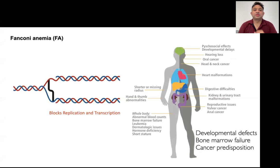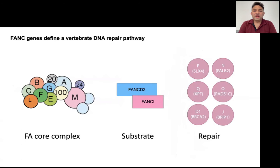These crosslinks block DNA from being replicated and block transcription as well, and if these crosslinks cannot be repaired, it causes genome instability and leads to Fanconi anemia, which is a rare recessive genetic disorder. There is a wide spectrum of symptoms in Fanconi anemia patients, including developmental defects, bone marrow failure, and cancer. But at the molecular level, all Fanconi anemia patients have the inability to repair DNA crosslinks effectively.